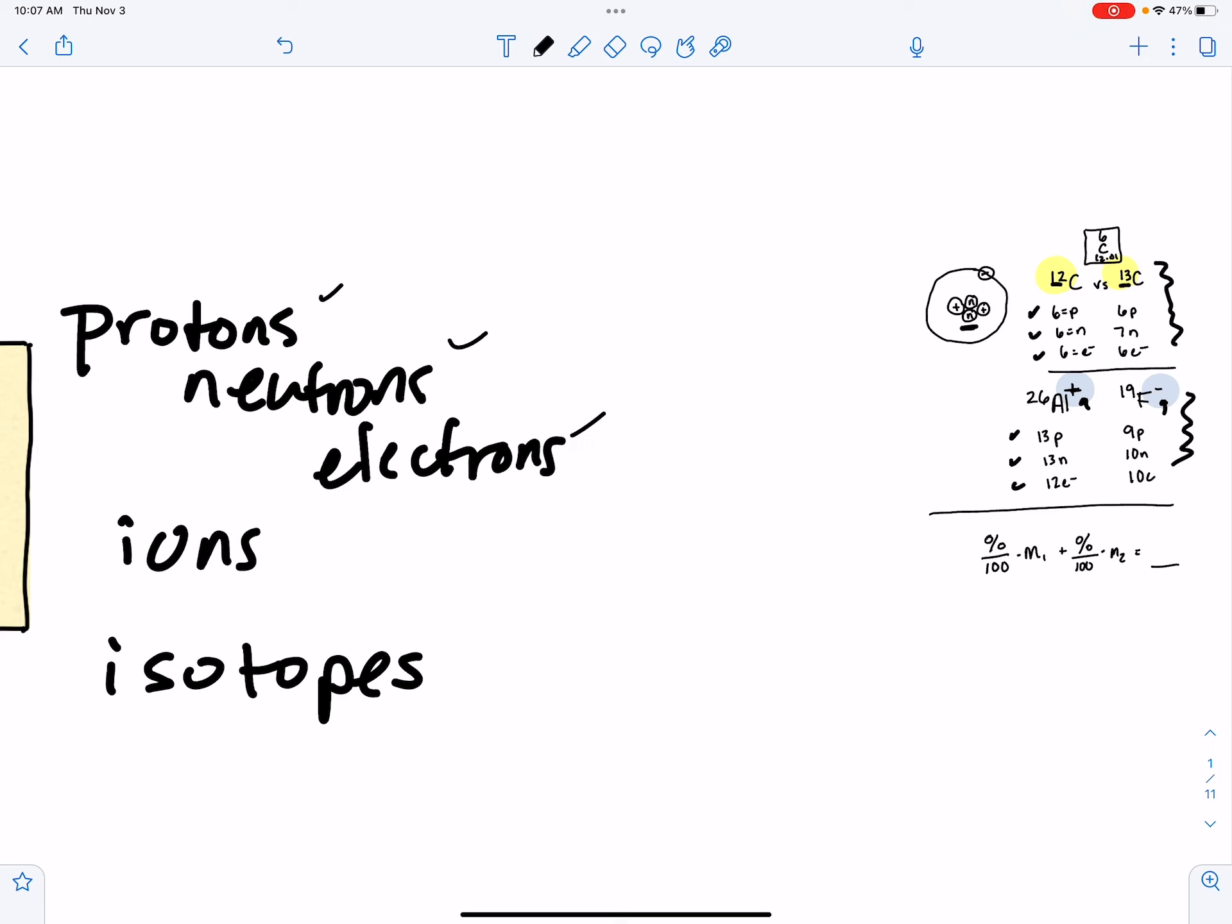Then finally at the end, you're going to be using an equation that looks like this to figure out information about isotopes and what the percent abundance of either different isotopes or the overall atom.